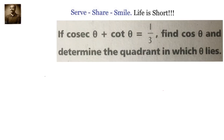If cosecant theta plus cot theta equals 1 by 3, find cos theta and determine the quadrant in which theta lies. Cosecant theta plus cot theta is given as 1 by 3. We need to find out cos theta and also determine the quadrant in which theta lies.